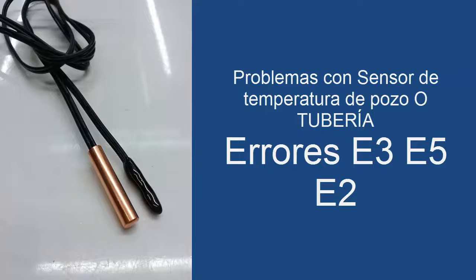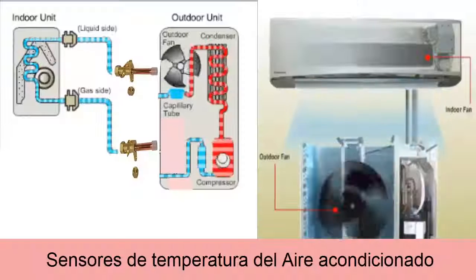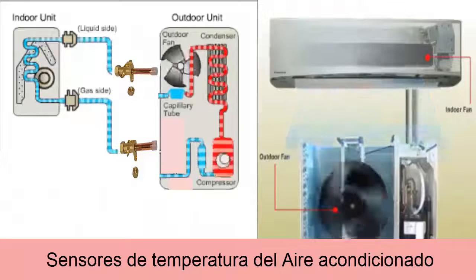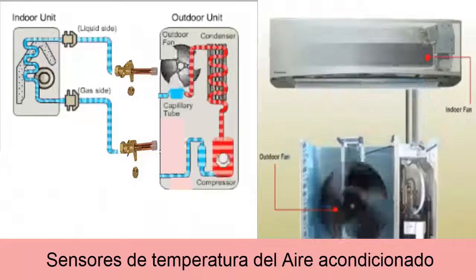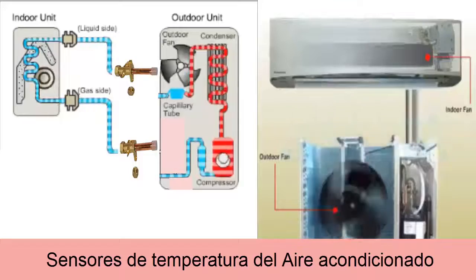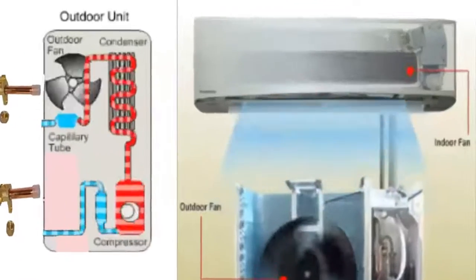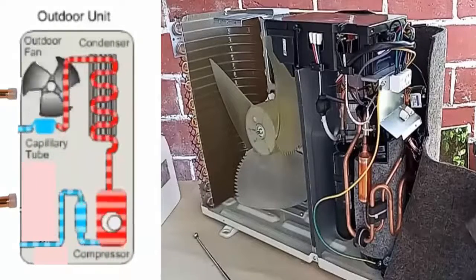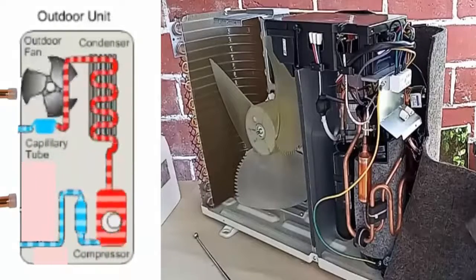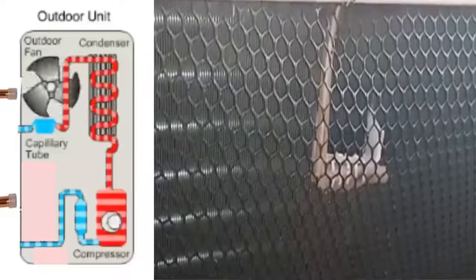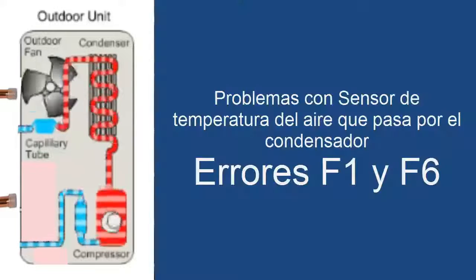In addition to these two sensors, which are the ones we will find more often, we can find other types of temperature sensors. At the condenser, we can find a sensor that measures the temperature of the air that passes through it. When this sensor has problems, we will find error codes F1 and F6.